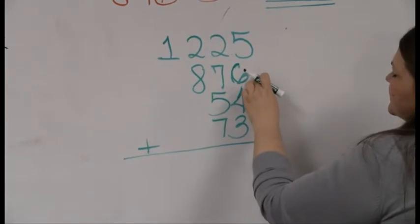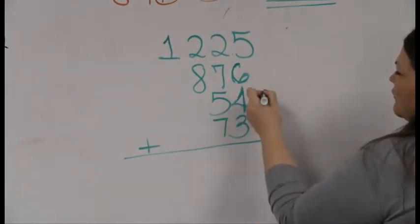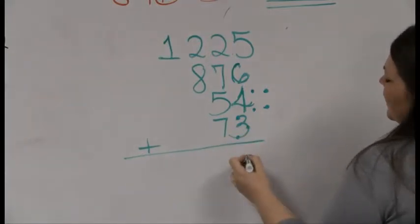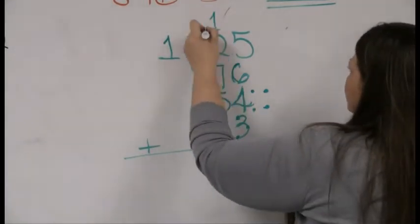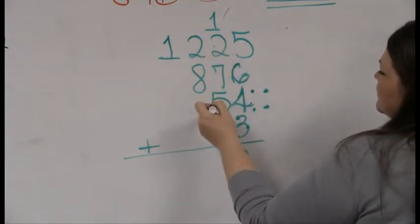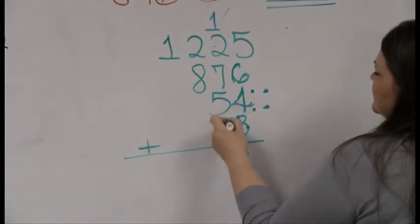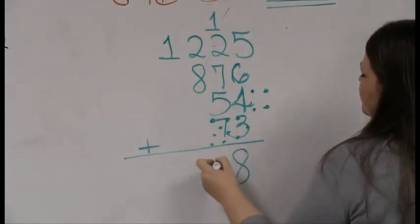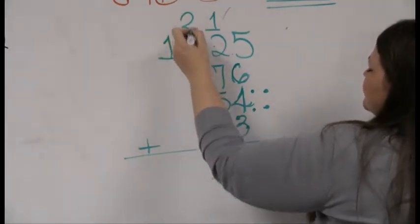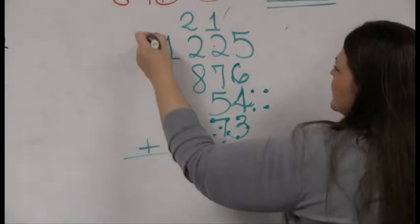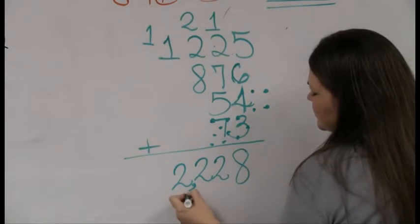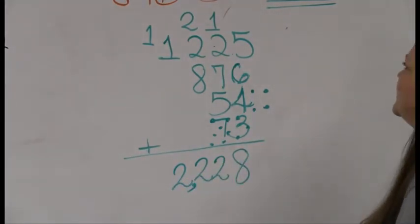So 5 plus 6 is 11, 12, 13, 14, 15, 16, 17, 18, and the 8 drops, and the 1 carries into the tens place. And again, 3 and 7 make 10, there's 15, 16, 17, 18, 19, 20, 21, 22. And 2 and 8 make 10, 11, 12, 2 down, carry the 1, and 1 and 1 make 2. So the answer to this is 2,228.